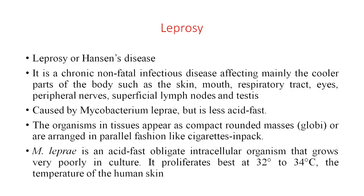Another granulomatous inflammation is leprosy, also called Hansen's disease. It is a chronic, non-fatal infectious disease affecting mainly the cooler parts of the body such as the skin, mouth, respiratory tract, eyes, peripheral nerves, superficial lymph nodes, and testes. It is mainly caused by Mycobacterium leprae, which is less acid-fast. The organisms in tissues appear as compact rounded masses like globi, arranged in parallel fashion like cigarettes in a pack.